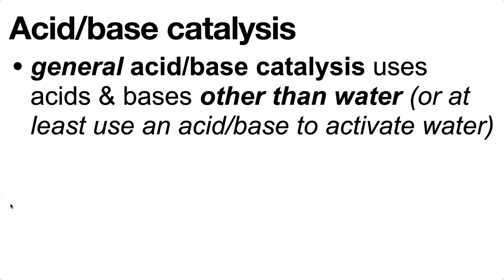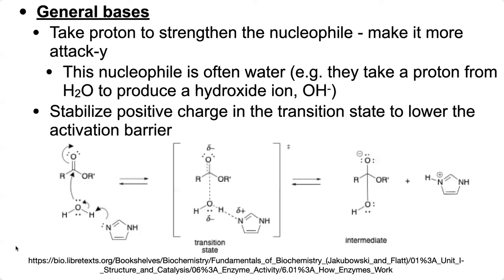We're typically dealing with general acid-base catalysis with enzymes. In terms of our general bases — a base steals a proton, and by stealing a proton, the base is able to strengthen the nucleophile. Remember how a nucleophile is going to be stronger if it has concentrated negative charge? That's going to make the nucleophile less happy and more reactive. If we take a proton, we can generate that concentrated negative charge, allowing us to have a stronger nucleophile that can go and attack our electrophile.